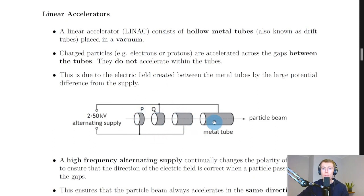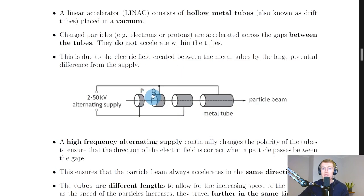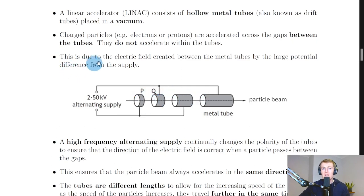Charged particles — for example electrons or protons — are accelerated across the gaps between the tubes. They do not accelerate within the tubes. So it's across the gaps, i.e. from P to Q in the diagram, and then from gap to gap, that the charged particles are accelerating. The charged particles themselves are not accelerating within the tubes.